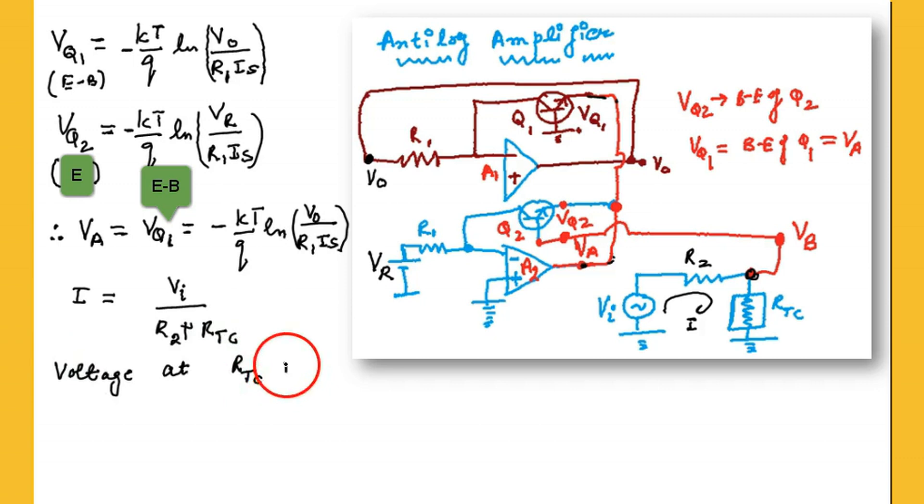So voltage at RTC is current into the resistor. So what is the current? Which is VI upon R2 plus RTC divided by RTC. That's the voltage becomes, that's VB.